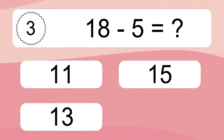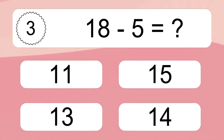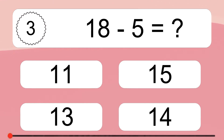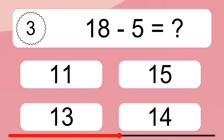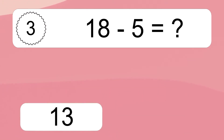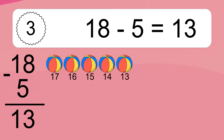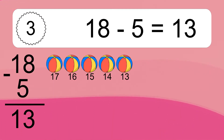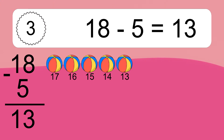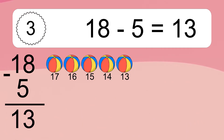18 minus 5 equals what? 18 minus 5 equals 13. Let's count it. 17, 16, 15, 14, 13.